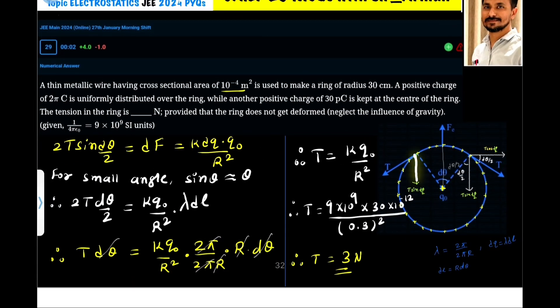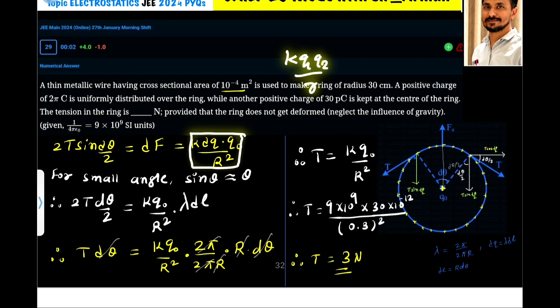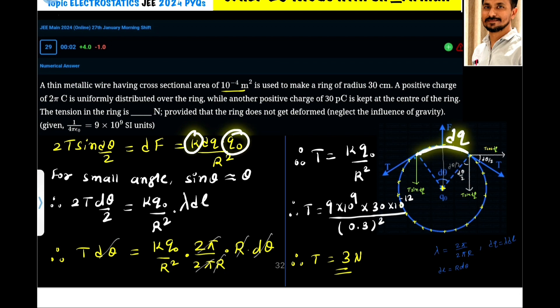So I hope you have understood this figure. Here I have written T sin(dθ/2), T sin(dθ/2). If you add them, it becomes 2T sin(dθ/2), and that equals the electrostatic force. This tension force balances the electrostatic force given by Coulomb's equation: K Q₁Q₂/R². So here K, and dQ is the small charge present on this ring, and Q₀ is the charge present at the center, divided by R² where R is the radius. Now for very small angle, we can omit sin θ. For sin θ we can write θ, and sin(dθ/2) we can directly write dθ/2. So it becomes T dθ = K Q₀/R².